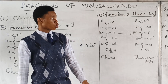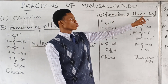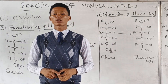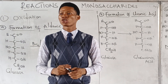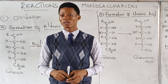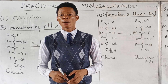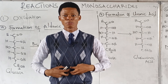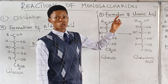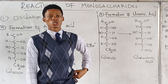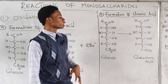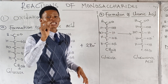The second form of oxidation that monosaccharides can undergo is formation of uronic acid. It is important to note that formation of uronic acid is very rare in the lab — it is not very easy to make uronic acid in a lab. It happens in biological systems where enzymes convert glucose to uronic acid. This is an enzymatic reaction.